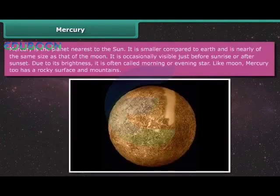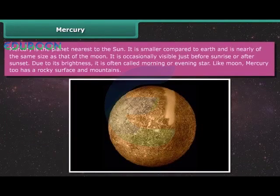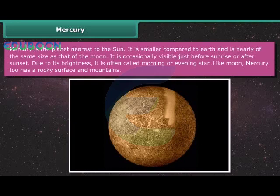Mercury is the planet nearest to the Sun. It is smaller compared to Earth and is nearly of the same size as that of the Moon. It is occasionally visible just before sunrise or after sunset. Due to its brightness it is often called morning or evening star. Like Moon, Mercury too has a rocky surface and mountains.